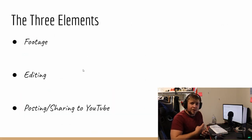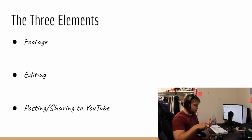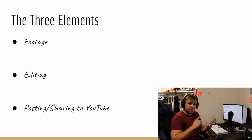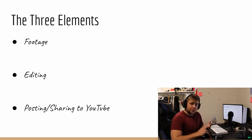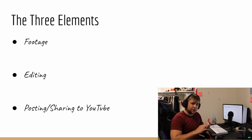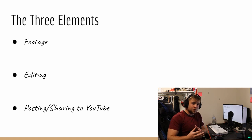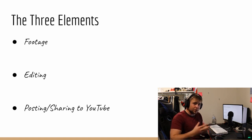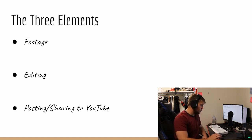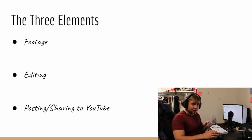There are three main elements in making a YouTube video. There's the element of gathering footage, the element of editing the footage that you got, and the final element of actually having a YouTube channel and posting what you've created onto that channel and sharing it with everybody. That's the three main elements, and that's what we'll be mainly talking about in this video.